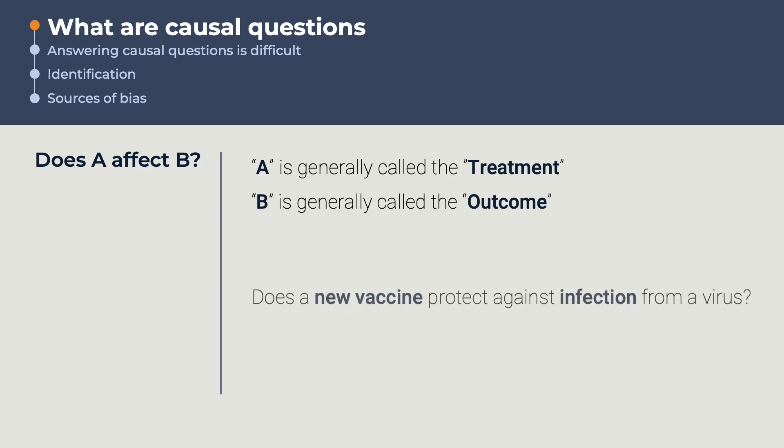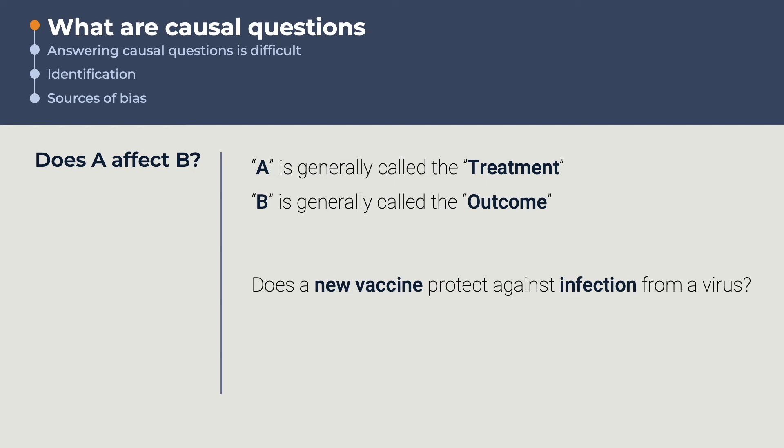For example, when asking does a new vaccine protect against infection from a virus, the treatment is the new vaccine, while the outcome is infection. In a similar fashion, when asking whether policing reduces crime, the treatment is policing, and the outcome is crime.